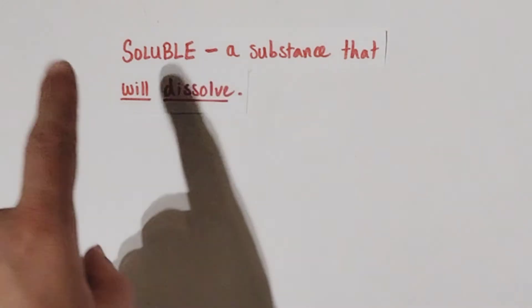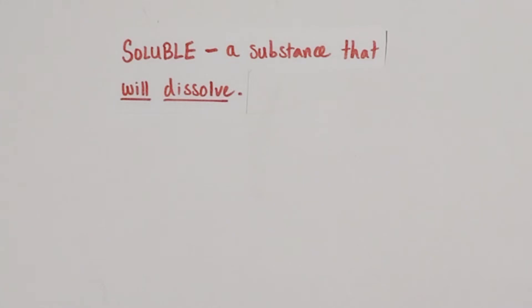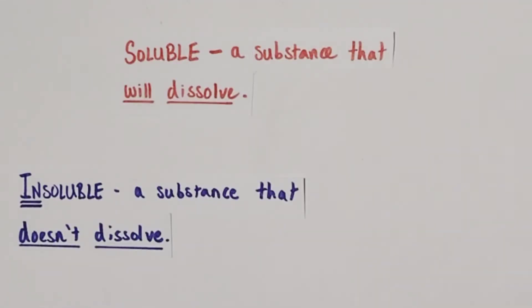Let's start off with the first term: soluble. A substance that will dissolve is described as being soluble. Next up we have insoluble, a substance or solid that will not dissolve.